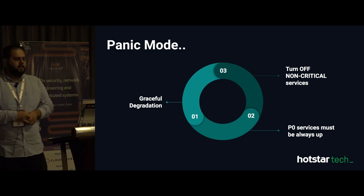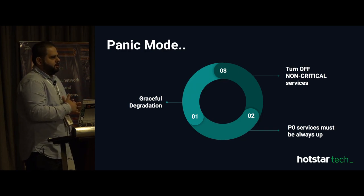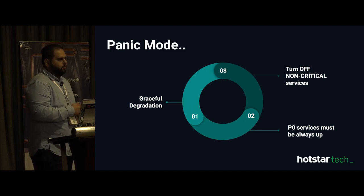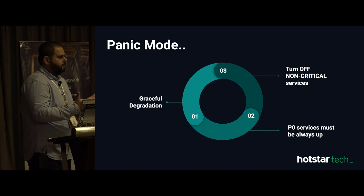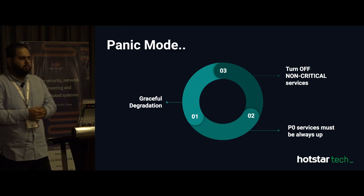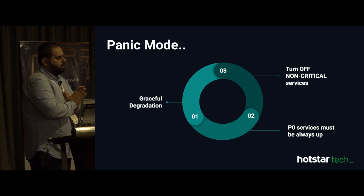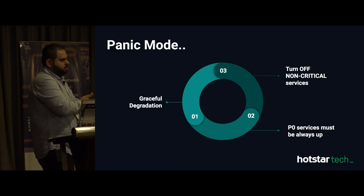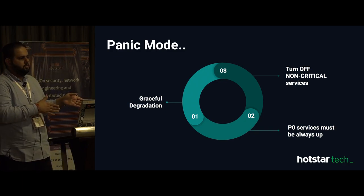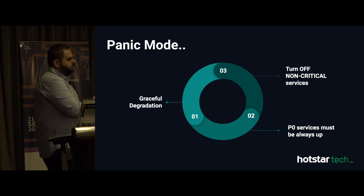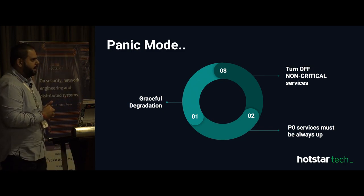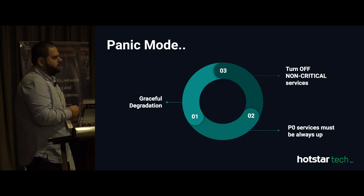If we know that API X cannot handle more than 10 million users, we go into a graceful degradation mode — panic mode means you keep all critical services up and shut down everything else, making room for key services. Key services for us are video delivery, ads, and subscriptions. Features like social chat and emojis sent during the match are not that important compared to video delivery. When you have 25.3 million users on the platform you know everyone is watching the match, so non-match services like recommendation and personalization can be turned off, reducing load on the backend and the network pipe, creating more room for video and important API calls.